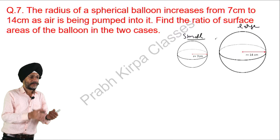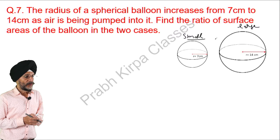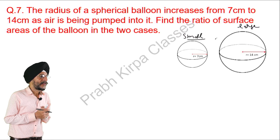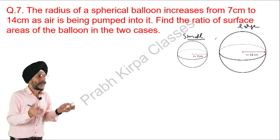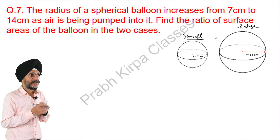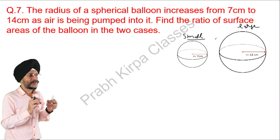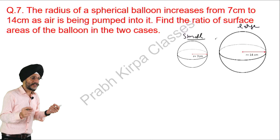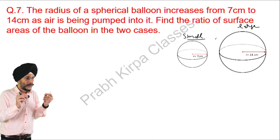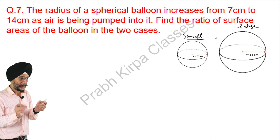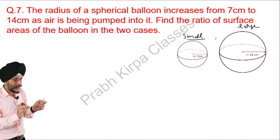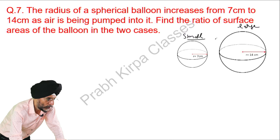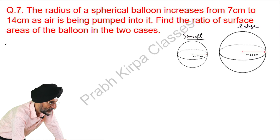In our earlier questions, radius or diameter was given and we had to calculate the surface area, and the formula was very simple: 4 pi r square. This question is also very simple, though it appears to be somewhat difficult. Now let us see how we will solve it.